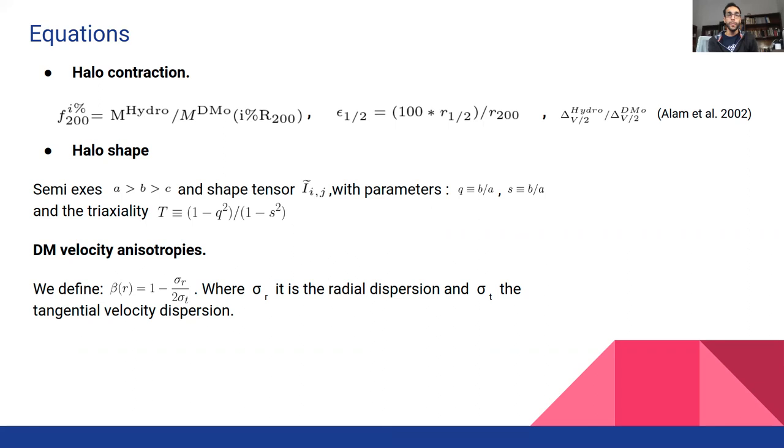For halo shape, our main interest is to dig into the interdependence of halo shape and galaxy morphology. For this, we have diagonalized the shape tensor where A, B and C are the major, intermediate and minor axes.